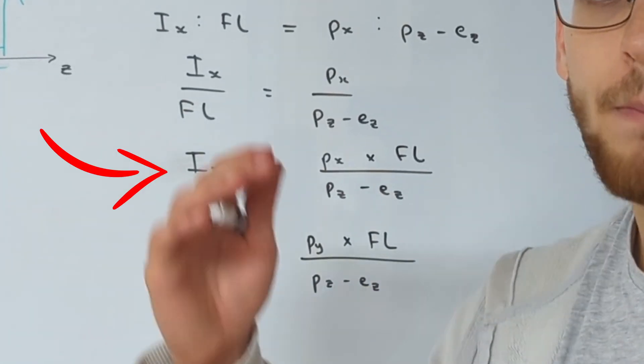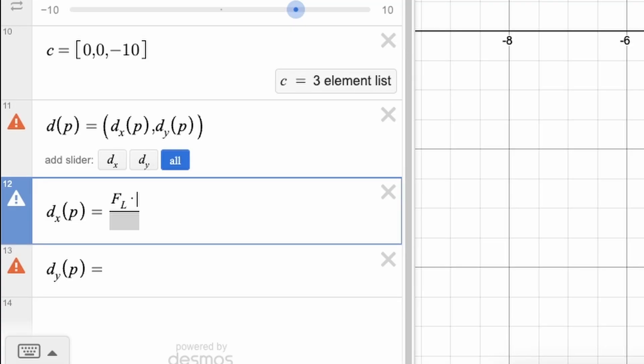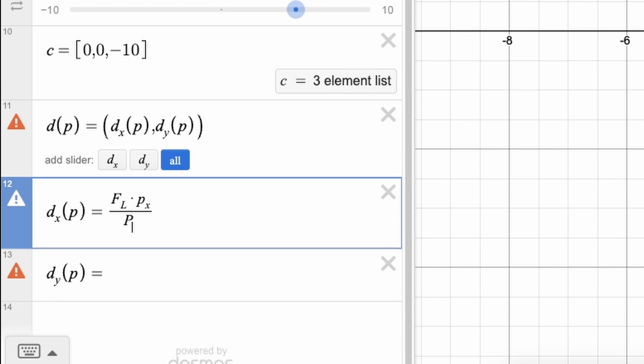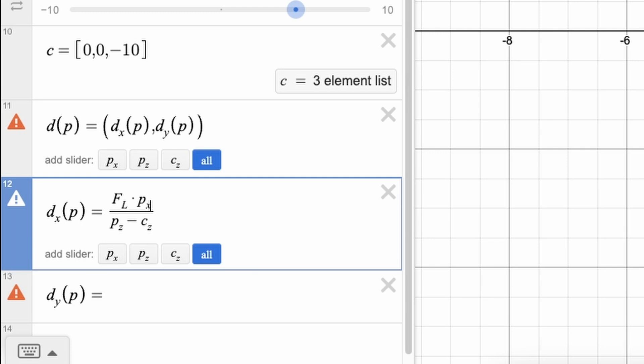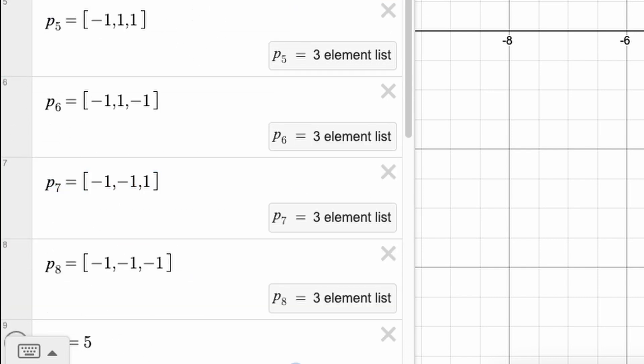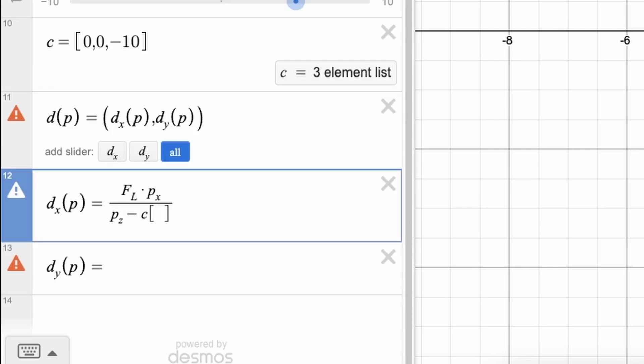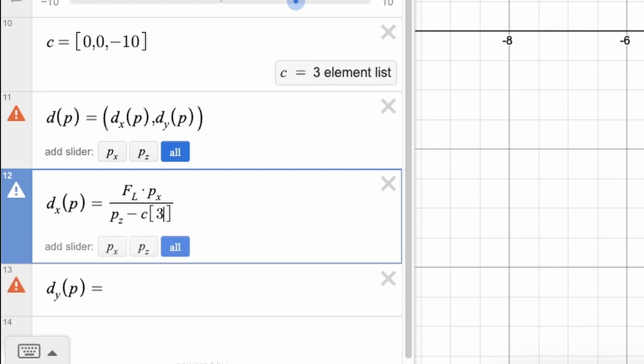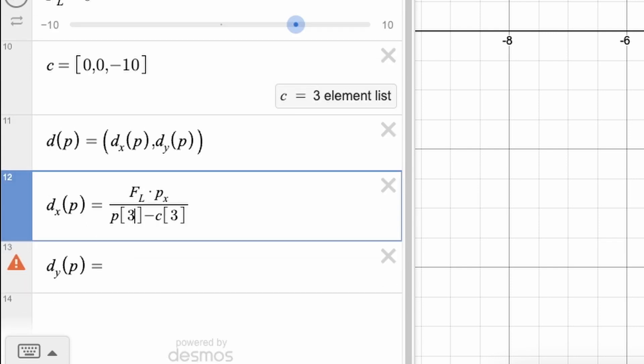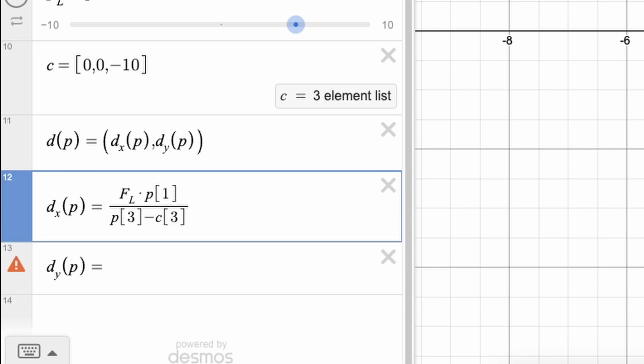So I subscript X is equal to the focal length, multiplied by the X value of the P, the point P, all over the Z value of the point P, minus the Z value of the camera. Now, you can't just use P X and C Z to refer to the Z coordinate, because we've put these in as arrays, and the reason that we've done that is because this is a two-dimensional graphing calculator, not a three-dimensional one. So Desmos won't understand X, Y, Z, right? So we need to put in the index instead of the Z coordinate, which is the third one in the array. So we're going to put square brackets and then three, and then for the X coordinate, that's going to be square brackets and then one, and that now should work.